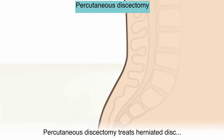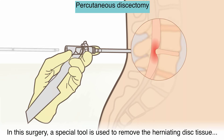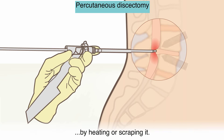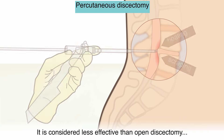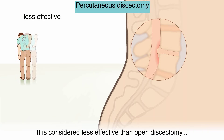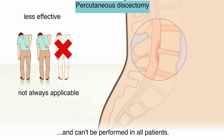Percutaneous discectomy treats a herniated disc by reducing the size of the herniation. In this surgery, a special tool is used to remove the herniating disc tissue by heating or scraping it. It is considered less effective than open discectomy and can't be performed in all patients.